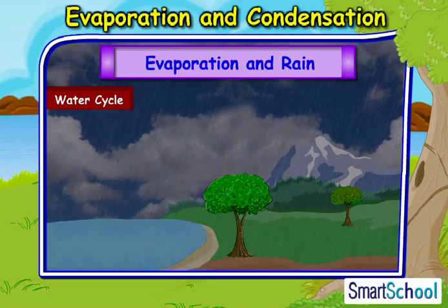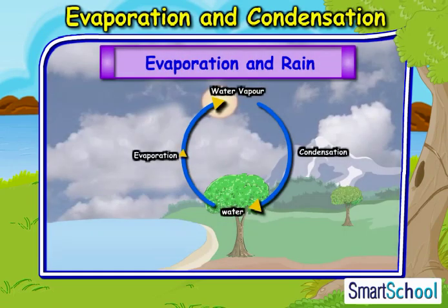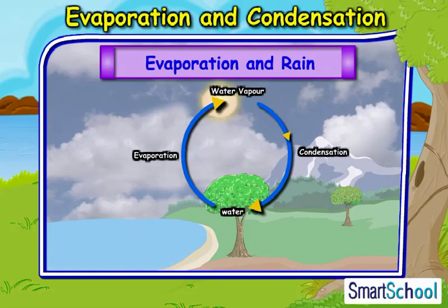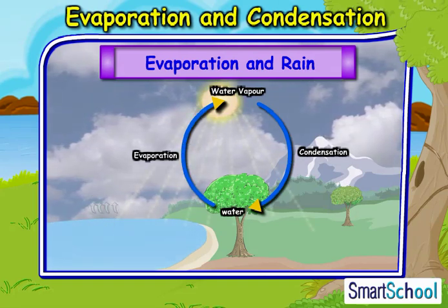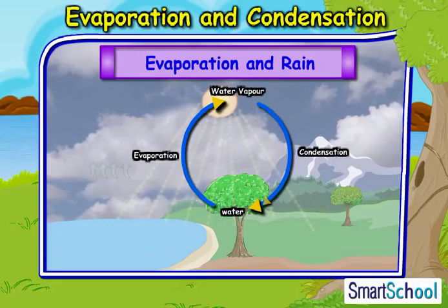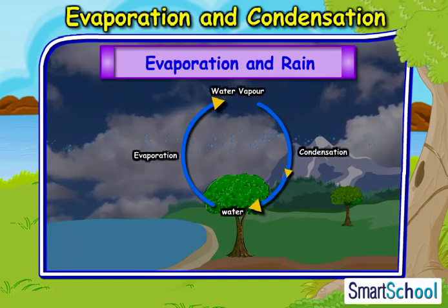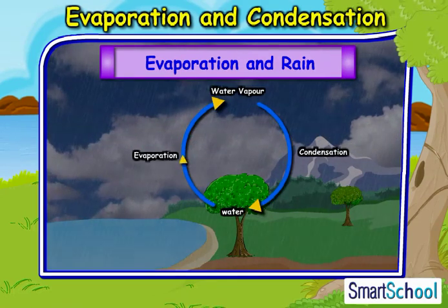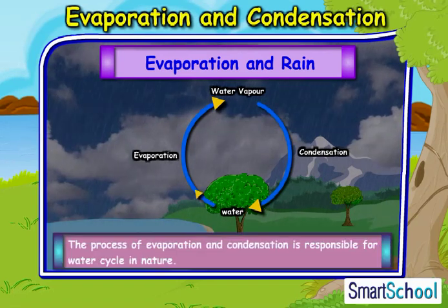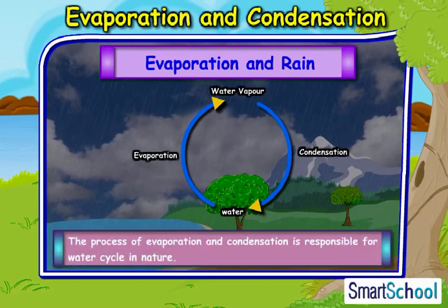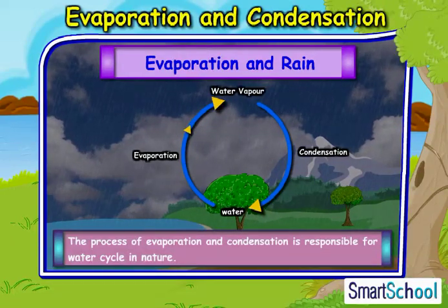This results in rain. Thus, the water completes a full cycle — first being in the liquid form, then converting into gaseous form, and then finally converting back to the water form in the form of rain. We can conclude that the process of evaporation and condensation is responsible for the water cycle in nature.